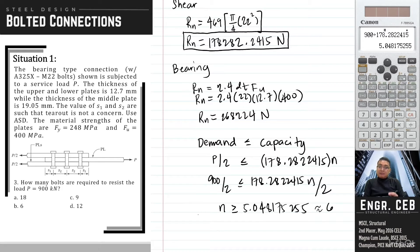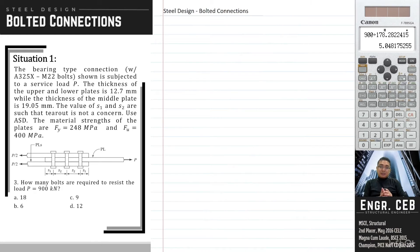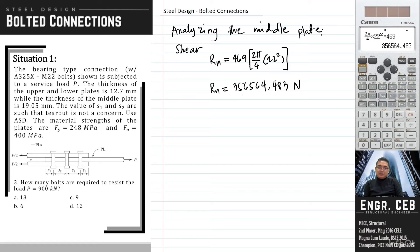Therefore, we will use 6 bolts, considering the upper plate. We will not yet consider that as an answer because we still need to analyze the middle plate. So we solve for the nominal strength considering the bolt shear. Considering the middle plate, the bolts are subjected to double shear. So therefore, R sub N is simply equal to 469 times 2 pi over 4 times 22 squared. Therefore, the nominal strength is 356,564.483 newton.